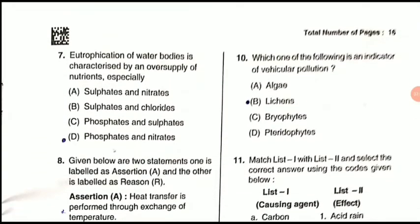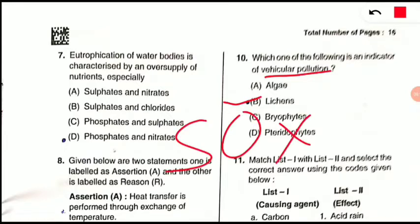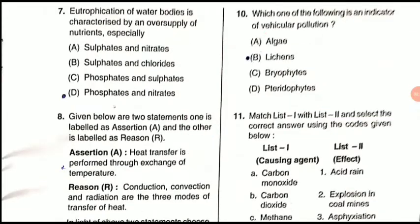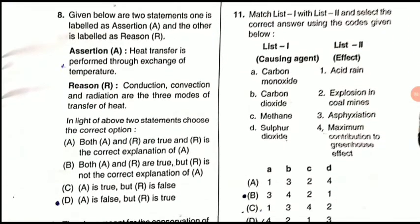Question 10: Which is an indicator of vehicular pollution? Lichens — the symbiotic relationship between fungi and algae — are the indicator. Lichens are indicators not only for sulfur dioxide but also for nitrogen compounds. So lichens as a group of species serve as pollution indicators.